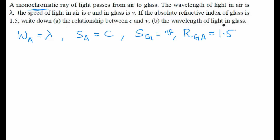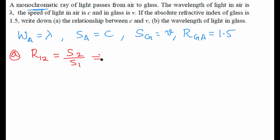Let's consider the first question: we need to find the relationship between c and v. We already know that the refractive index of the first medium with respect to the second medium is equal to the speed of light in the second medium divided by the speed of light in the first medium. Considering this, and that n_ga equals 1.5, we can write that this equals the speed of light in air divided by the speed of light in glass.